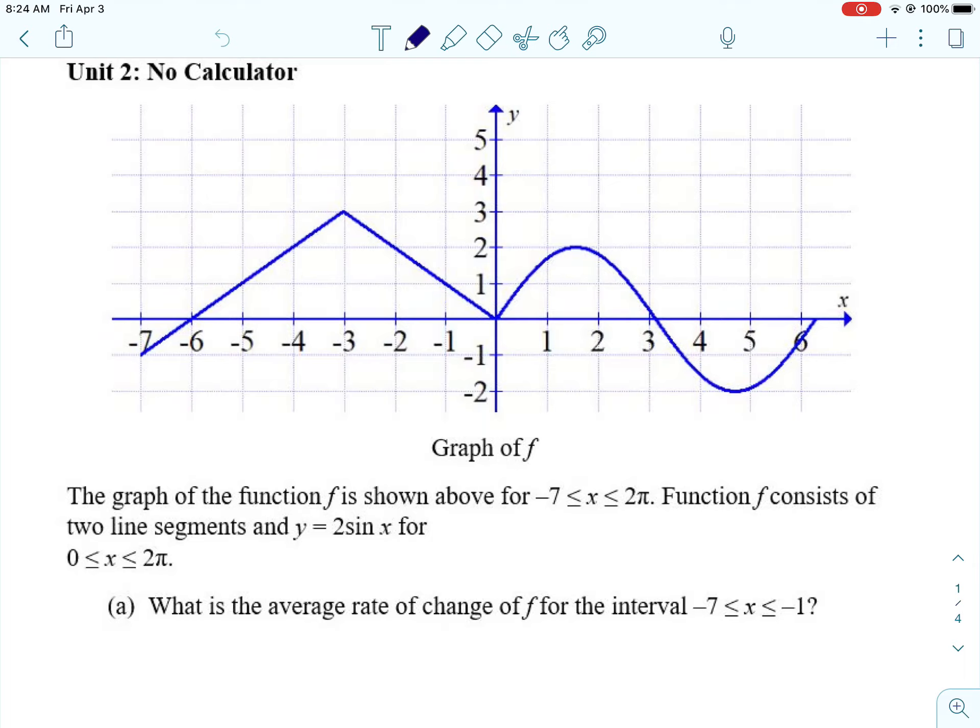We're given a graph of F, and on the left side of the graph, we know that it's just made up of line segments, and then the right side of the graph from 0 to 2π is made up by the curve y equals 2 sine of x.